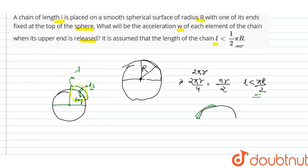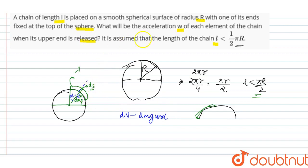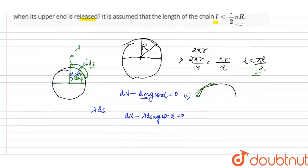The chain has a mass per unit length λ (lambda). The angle for the element is alpha. Looking at the components — the normal force acts normally, and the downward component is dmg·cos(alpha). Since it was initially at rest with one end fixed, this will be equal to zero. So dn minus λ·ds·mg·cos(alpha) equals zero.